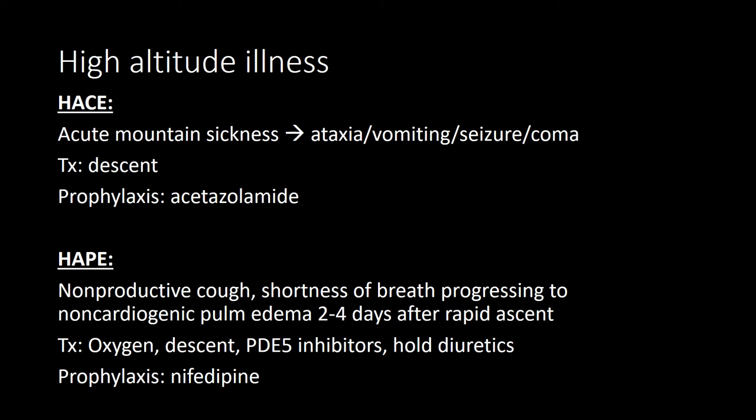There are two main disorders to understand in terms of high-altitude illness: high-altitude cerebral edema (HACE) and high-altitude pulmonary edema (HAPE). Both fall under the general umbrella of high-altitude illness. Prevention of any of these disorders is gradual ascent. Acute mountain sickness is the most common cause of high-altitude illness.